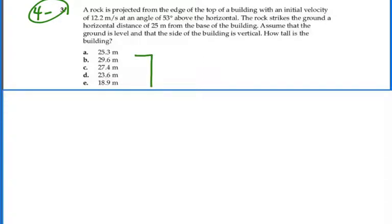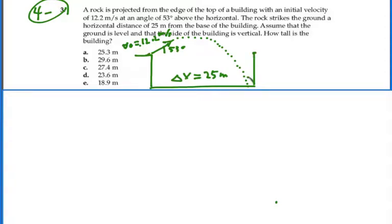Let's say we have a building and we project this rock at a 53 degree angle with the initial velocity of 12.2 meters per second. It's going to follow projectile motion, constant acceleration in the y direction, no acceleration in the x direction. And it's going to hit with a displacement of 25 meters from the edge of the building. So that will be our x displacement. Our y displacement will be from the top of the building down to this point.